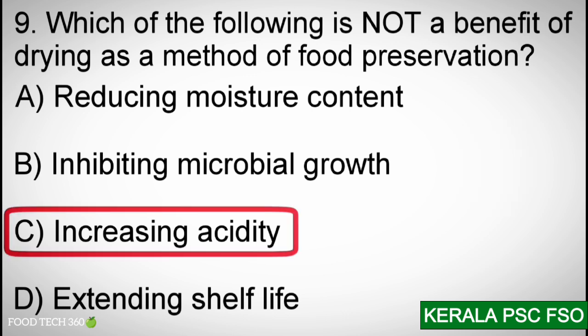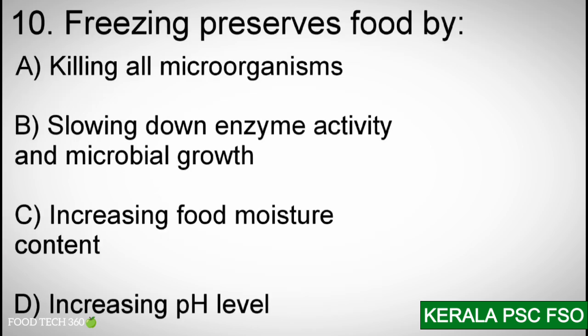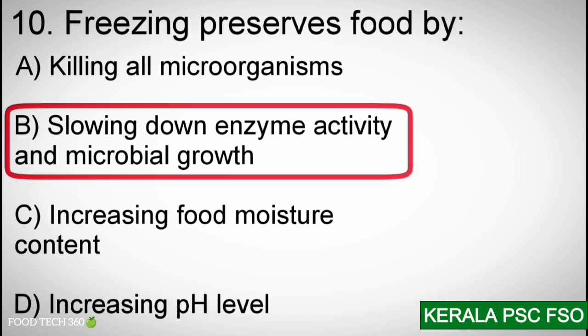Question number 10: Freezing preserves food by — A. Killing all microorganisms, B. Slowing down enzyme activity and microbial growth, C. Increasing food moisture content, D. Increasing pH level. Correct answer: B. Slowing down enzyme activity and microbial growth.